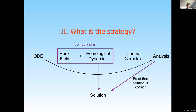I can talk about the strategy. The idea is that we start with the ODE, and from the ODE I need to produce something that I call a Rook field — a purely combinatorial object. From this Rook field, I extract a combinatorial representation of dynamics. From this combinatorial representation, I do computational topology — combinatorial topology — and for lack of a better name I'll call it homological dynamics. This is a bunch of objects extracted from the dynamics whose homological properties I care about. And then I compute something I call a Conley complex — a purely combinatorial chain complex. Once I've done that, I've solved the ODE.